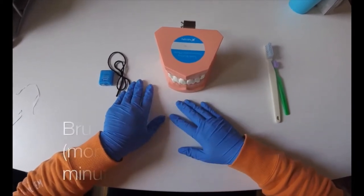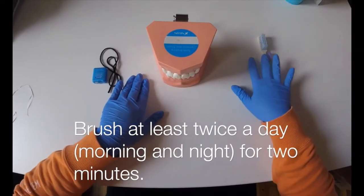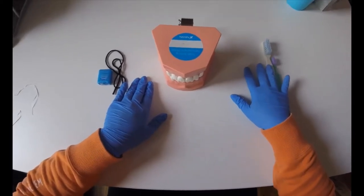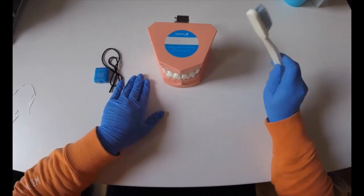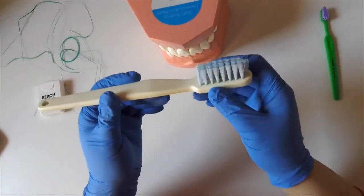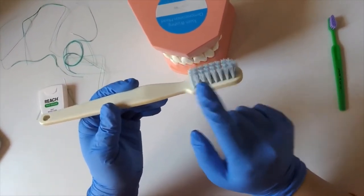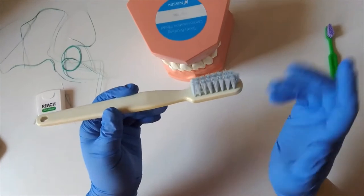We want to be brushing at least twice a day in the morning and in the night time for two minutes. So a good technique to brush our teeth, we want to take our toothpaste, of course with fluoride, and we want to put the toothpaste at the end of the bristles all the way to the front of the bristles.